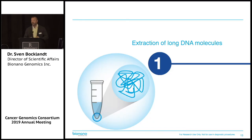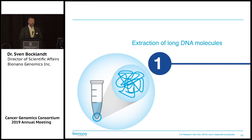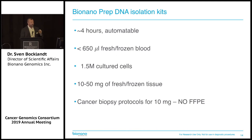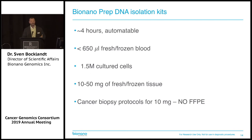We start with extremely long molecules. The molecules we image are on average 300 kB, but they go all the way up to about 3 megabase pairs. To get these long molecules, you need a very gentle, careful DNA isolation protocol. Our input requirements are less than 650 microliters of fresh or frozen blood. We can work with EDTA and heparin blood, also bone marrow aspirates. You can start with a million and a half cultured cells, or up to 50 milligrams of fresh or frozen tissue. Everything we'll see today is on hematological cancers, but we can work with solid tumors as well — as little as 10 milligrams — as long as they have not been FFPE treated, because then there is no long DNA.